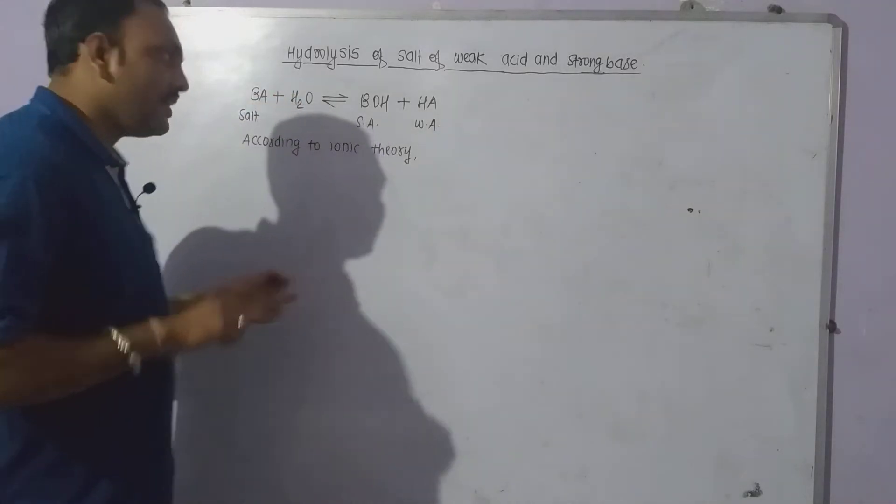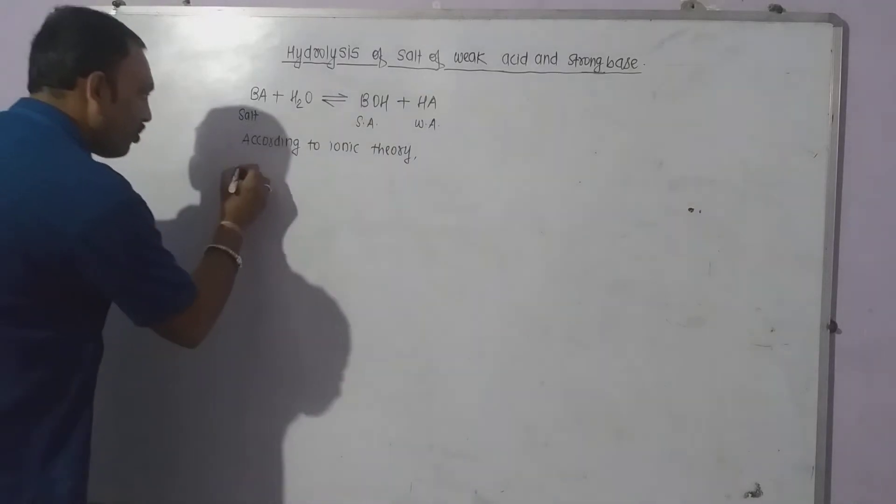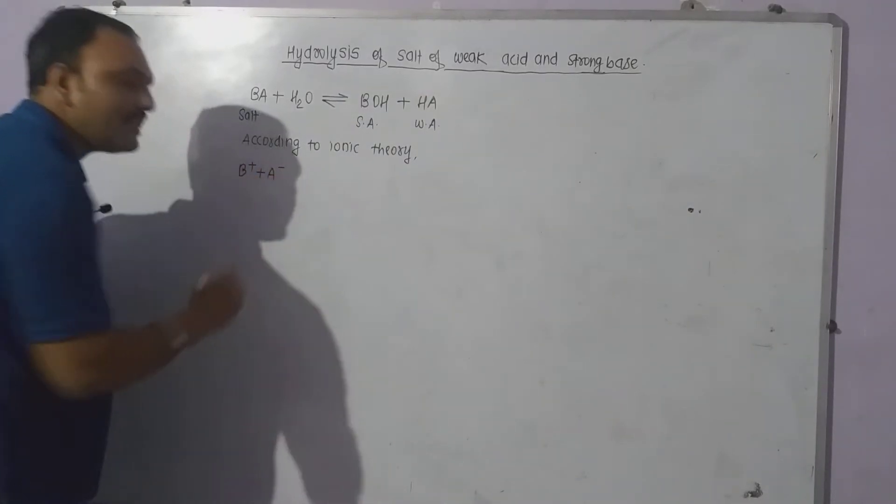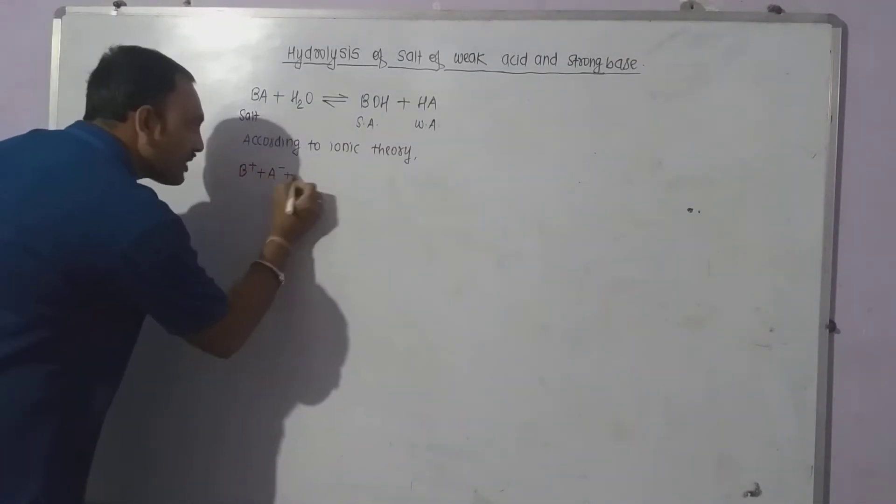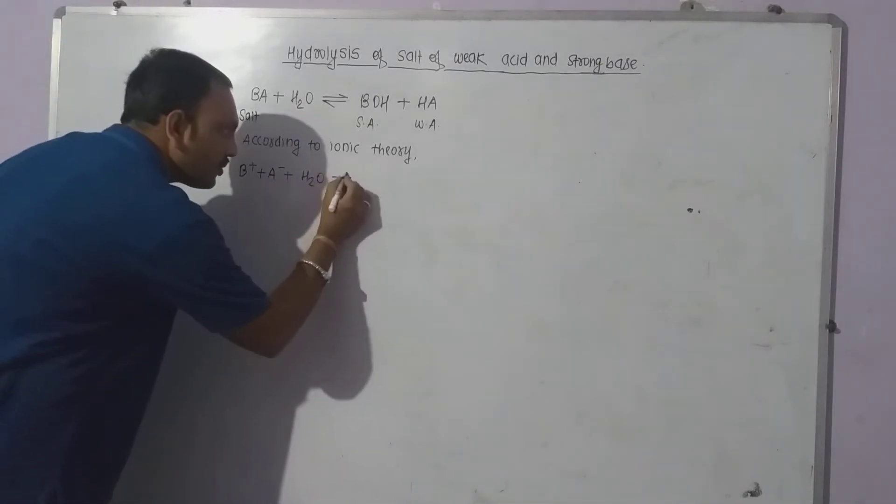Salt BA is strong electrolyte so this can be written into ions as it is ionized completely, that is B+ and A-. Water being weak electrolyte cannot be written into ions.